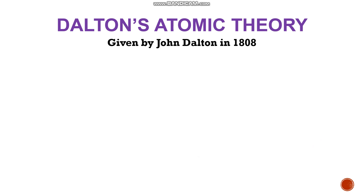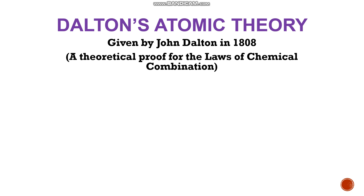Starting with Dalton's atomic theory — this theory was given by John Dalton in 1808, and this theory is a theoretical proof for the laws of chemical combination. The postulates of this theory can explain the laws of chemical combination. There are five laws, out of which the first four are regarding masses and the fifth is about volumes. Dalton's atomic theory gives a theoretical proof for the first four laws but does not give any explanation for the fifth law, which is based on volumes.